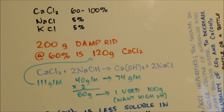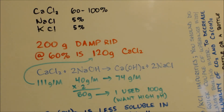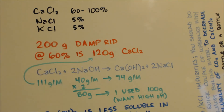Damp Red has about 60 to 100% calcium chloride and five percent of two other salts, sodium and potassium. It's kind of a screwed-up MSDS, but that's what I got. So I'm going to use 200 grams of Damp Red, and I'm assuming, because I've already made calcium carbonate, that it's a crappy percentage. So we're going to go by 60%, which would be 120 grams of the 200 being calcium chloride. According to our stoichiometry, we're going to need twice as much sodium hydroxide.